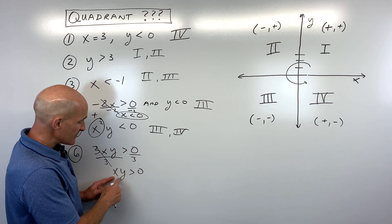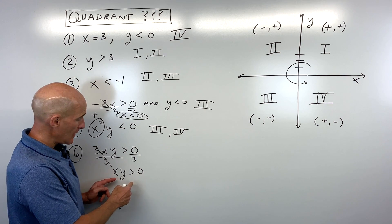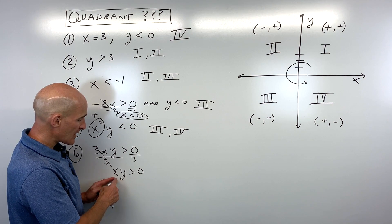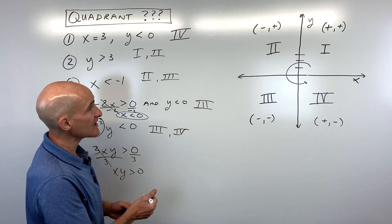So we could have a x is positive and y is positive. A positive times a positive, that'll be positive, greater than zero. Or x and y can both be negative, because a negative times a negative is positive, and that's greater than zero. So where does that occur?